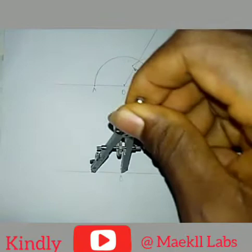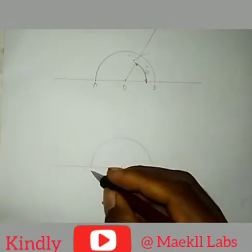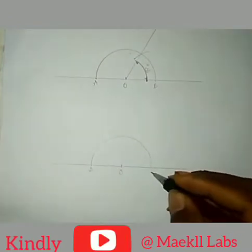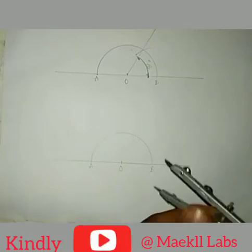Place it at point O and draw a semicircle. After drawing the semicircle, the first portion here should be A, the second portion should be B. With the same radius which you used to draw the semicircle, place your compass at either point A or B.